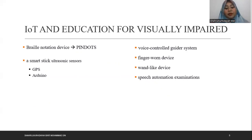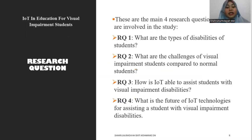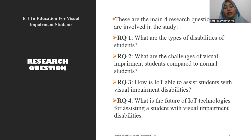A space automation examination system assists students sitting for their examination. Next are the research questions. There are four main research questions involved in this study. RQ1: What are the types of disability of students? RQ2: What are the challenges of visual impairment students compared to normal students? RQ3: How is IoT able to assist students with visual impairment disabilities? RQ4: What is the future of IoT technologies for assisting students with visual impairment disability?